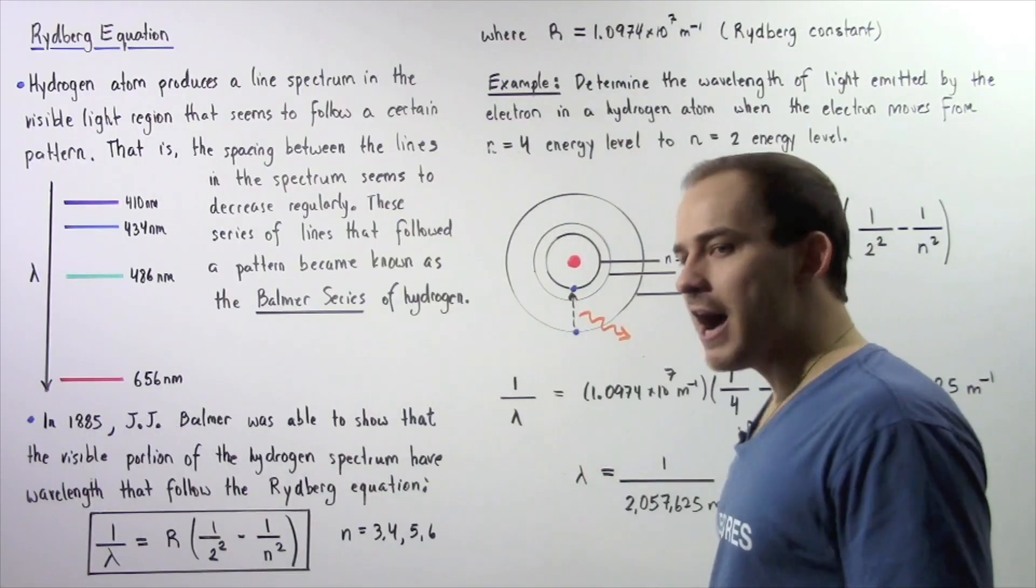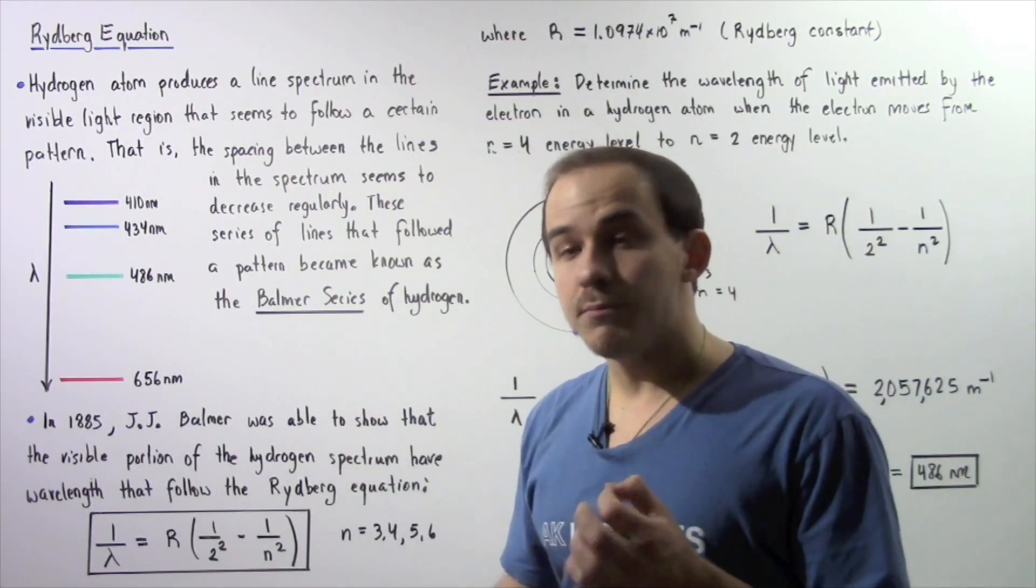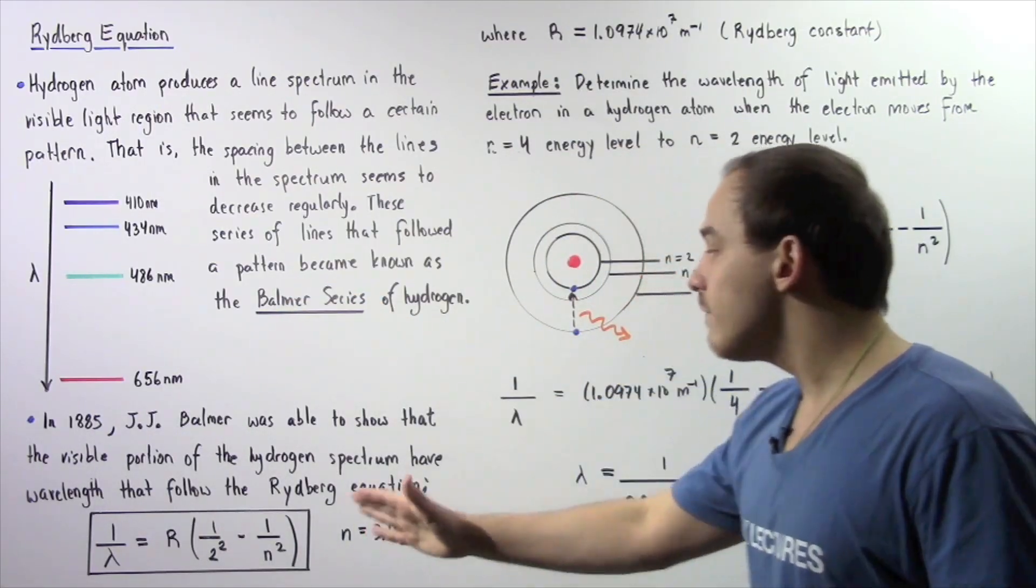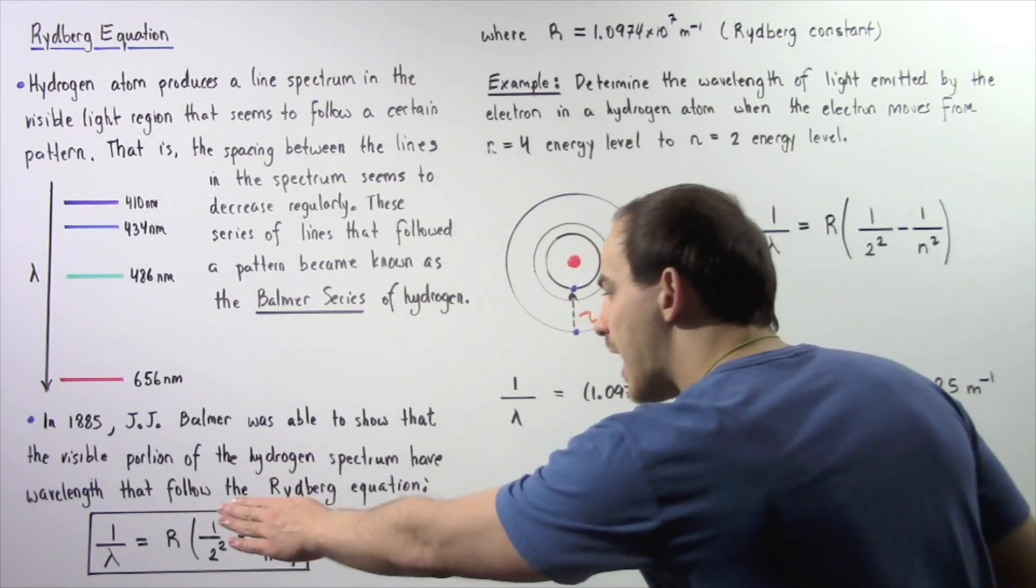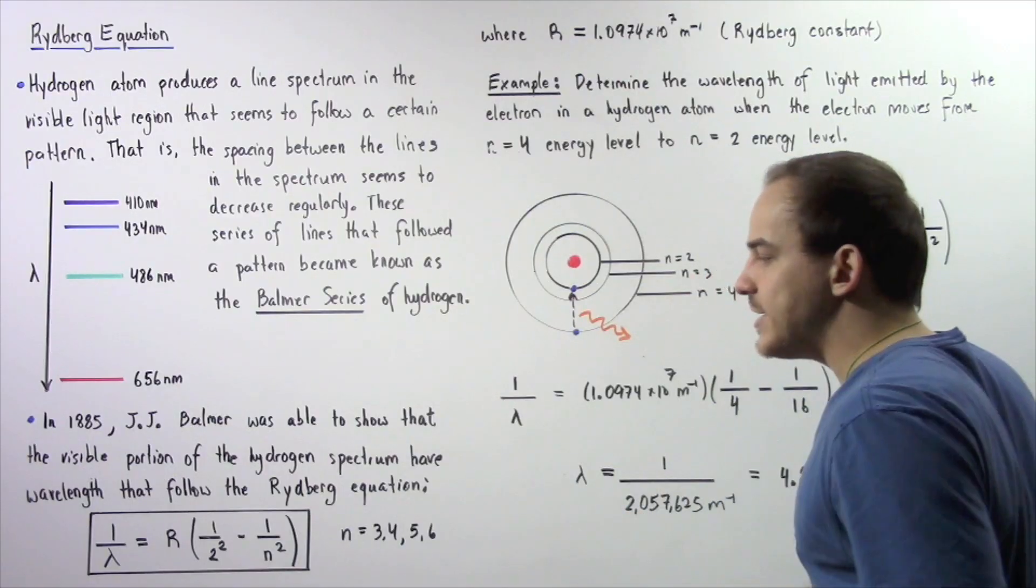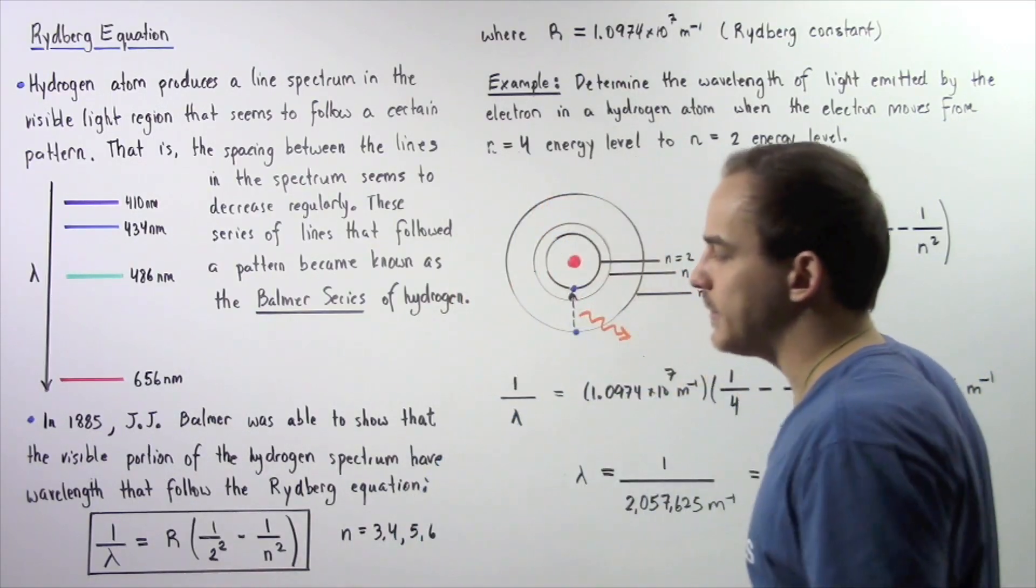Now in 1885, J.J. Balmer was able to show that the visible portion of the hydrogen spectrum have wavelengths that follow the Rydberg equation that is given by the following formula.